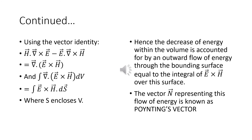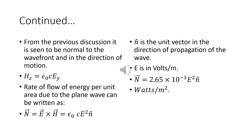The vector N representing this flow of energy is known as Poynting's vector. It is seen to be normal to the wave front and in the direction of motion. The rate of flow of energy per unit area due to the plane wave can be written as N = E × H = ε₀cE² n̂, where n̂ is the unit vector in the direction of propagation. E is in volts per meter, and N = 2.65 × 10⁻³ E² n̂, with units of watts per meter squared.